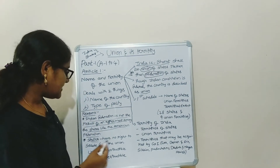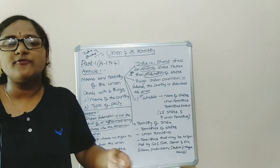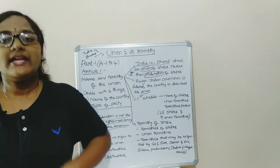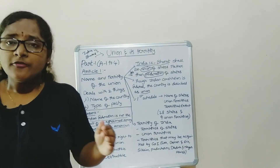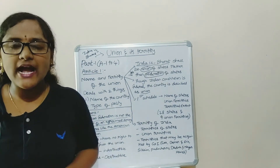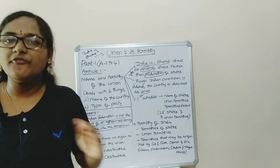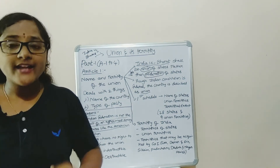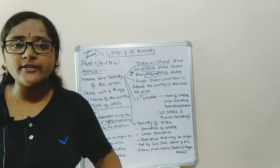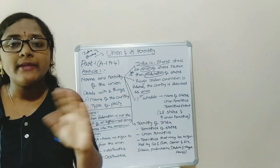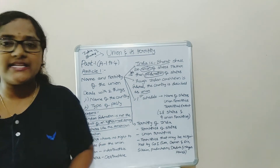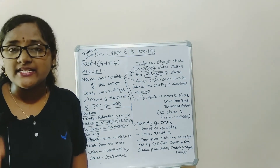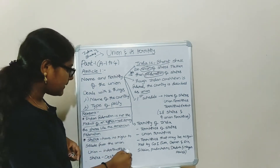The second reason is that states have no right to escape from the union — the states have no right to exit from India. For example, within our country, Telangana was separated from Andhra, meaning states are destructible in nature. But no state has the right to exit from India. That means our Indian union is indestructible in nature — an indestructible union with destructible states.